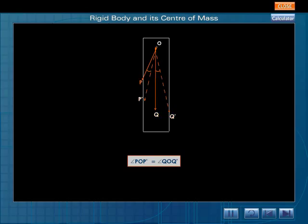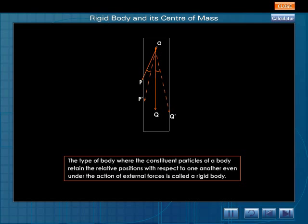The relative positions of P and Q under the action of external forces remain the same. This type of body where the constituent particles of a body retain the relative positions with respect to one another even under the action of external forces is called a rigid body.